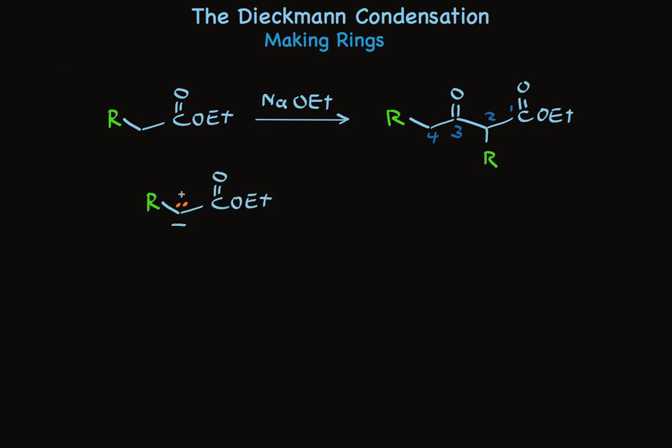We can follow the mechanism with arrow pushing. In the second step, the ethoxy group leaves. This is a powerful reaction because it makes a carbon-carbon bond and creates a product that has very useful functionality — a ketone and an ester.